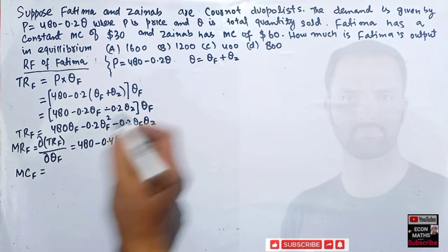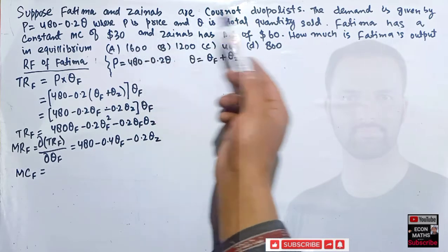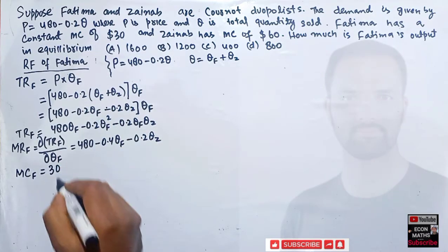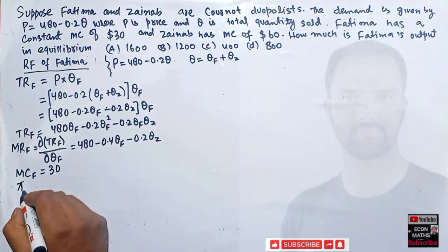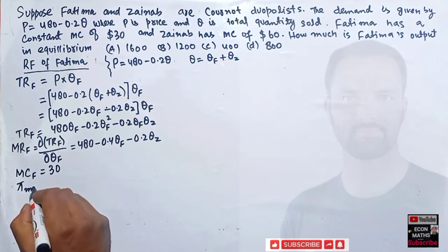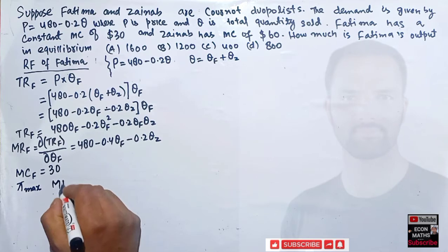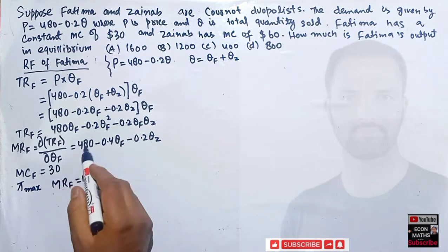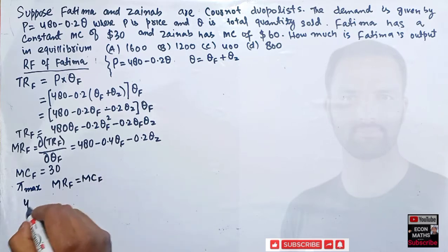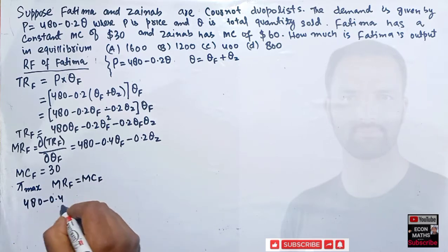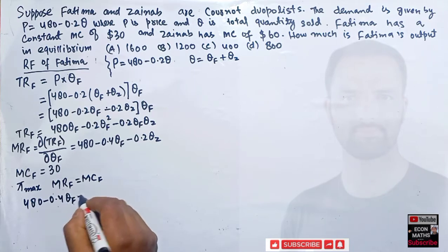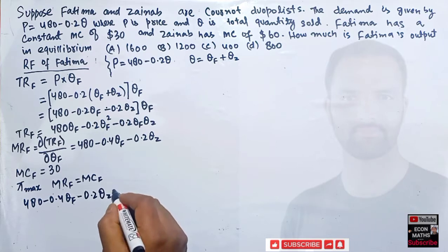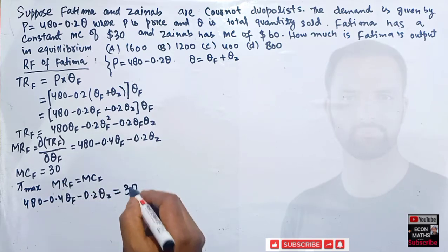Fatima has a constant marginal cost of 30. Profit maximization requires marginal revenue equal to marginal cost. So we set: 480 minus 0.4Qf minus 0.2Qz = 30.